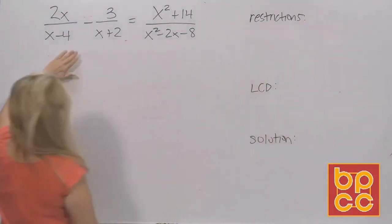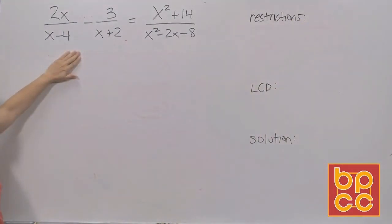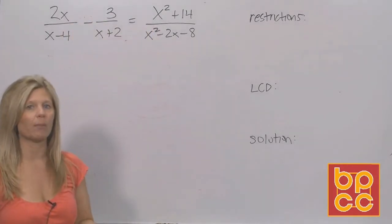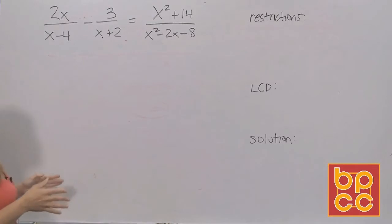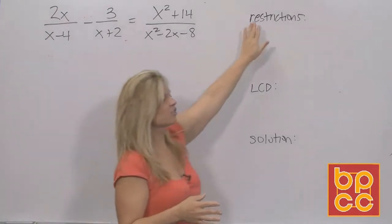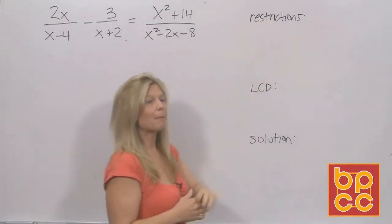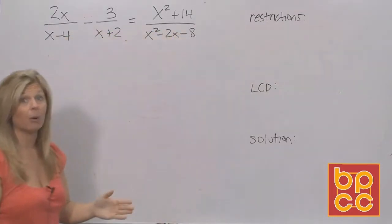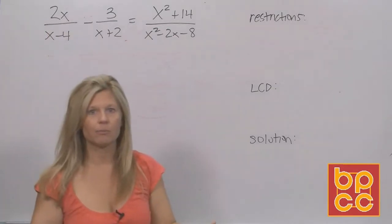All right, look at this lovely rational equation. It's obviously rational. It has the fraction bars. We don't like fractions. We're going to want to get rid of them. But the first thing they're always going to ask you with a rational equation is to state the restrictions. Remember, that means what number makes the denominator become 0. Because if there's a 0 here, you can't divide by 0.